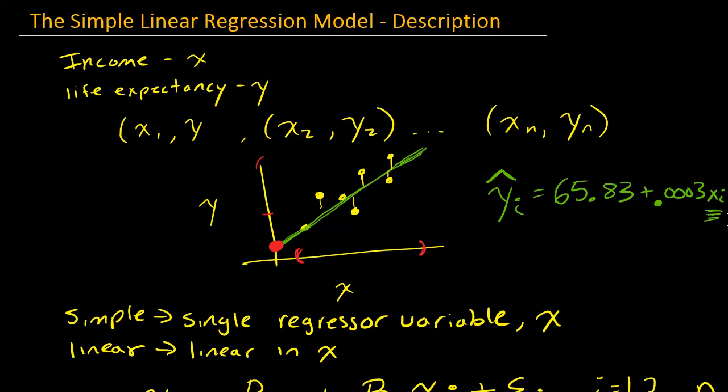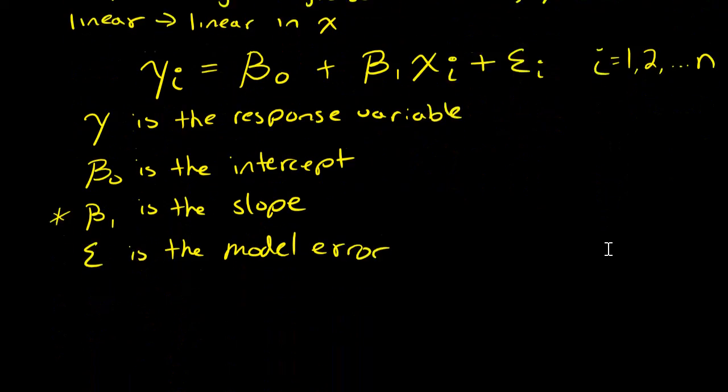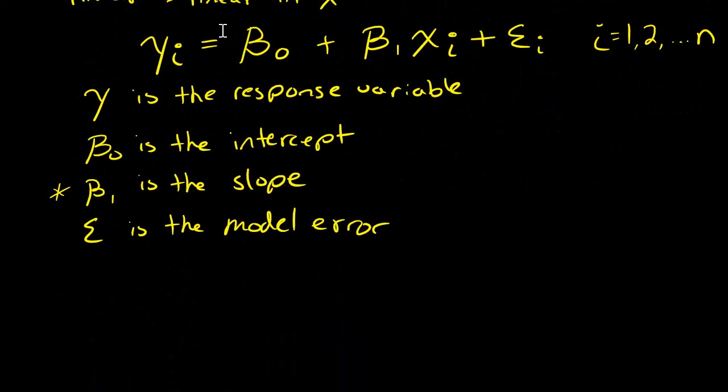So, and again, you would only interpret that within our observed range of X. Now, I can't just keep on going on and on forever for X, so really, really high incomes, it's not going to lead to a really, really high life expectancy. There are limits to how long people can live. And so once again, you must only interpret this within the range of your observed X values. So there you have it. That is the basic simple linear regression model.